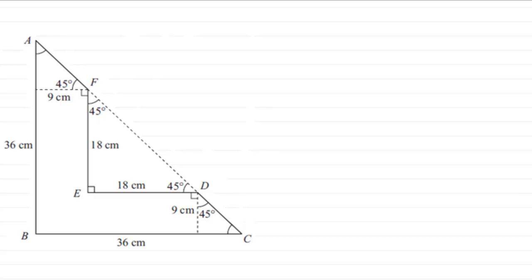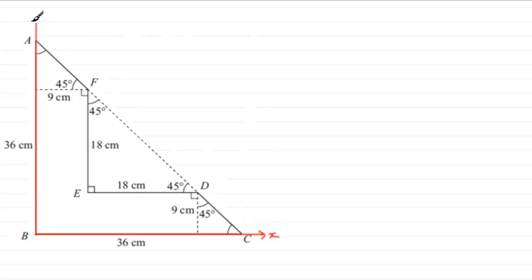For this question we're given a uniform lamina and asked to find the center of mass from the edges AB and BC. To do this, we first put some axes on — the x-axis across and the y-axis up from this edge. Our origin is at B.